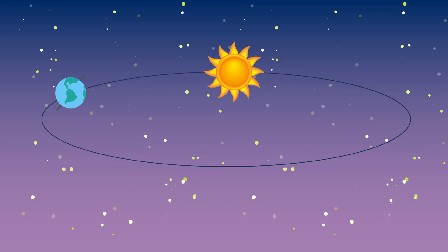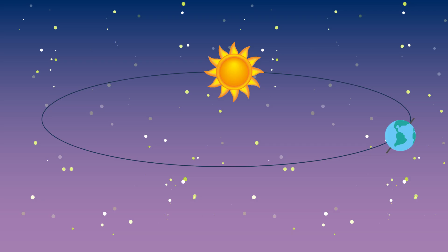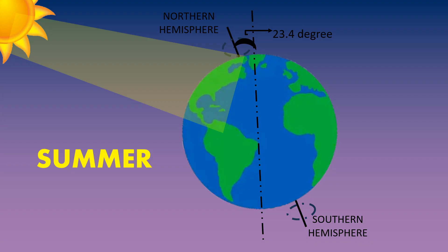Earth is also rotating on its axis, just like a top. But guess what? It's a little tilted, kind of like when you lean while riding a bike. The Earth is tilted on an imaginary line that runs from the North Pole to the South Pole — that is known as an axis. This tilt is approximately 23.4 degrees, around which the Earth is revolving.